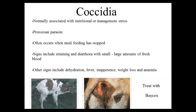Coccidia is not treated by any of the normal drenches. To treat it you need to use a product called Baycox, which you have to get from a vet clinic. It's quite an expensive product and it's an oral treatment, so you need to be able to get to your calves to administer it. If you suspect you have something like this, talking to your vet is the best course of action — you can also bring in a faecal sample to be tested.